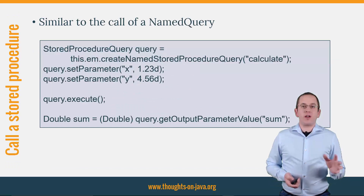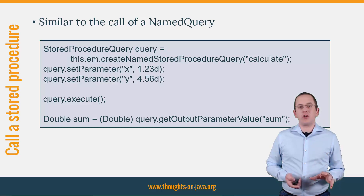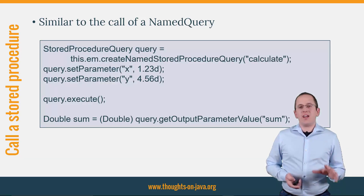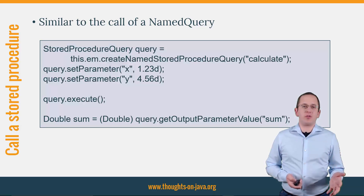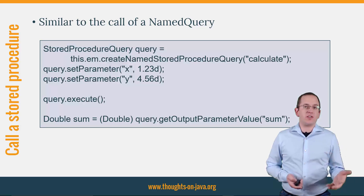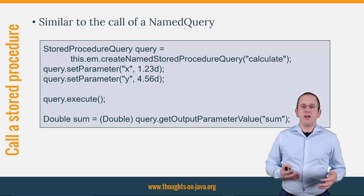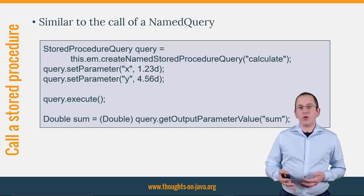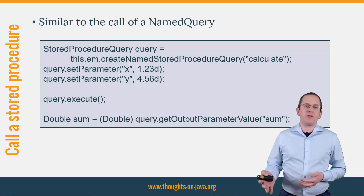But before we go to the IDE, I want to quickly show you how to use the named stored procedure query to execute a stored procedure call. As you can see in the code snippet, you just have to provide the name of the NamedStoredProcedureQuery to the createNamedStoredProcedureQuery method of the entity manager to instantiate a new query. You can then set the input parameters, execute it, and read the output parameter.